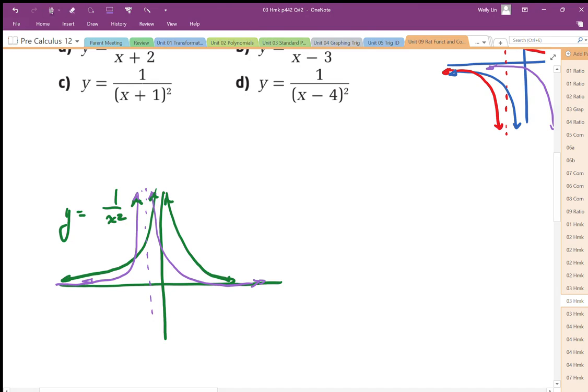For part d, the transformed function shifts positive 4, so we end up with our vertical asymptote shifted here. Again, the horizontal asymptote doesn't change, so we have the same root function shifted to the right 4.